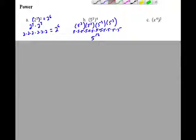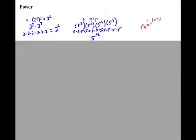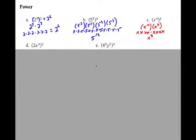One more with variables. We're saying x to the fourth and I'm squaring it, so I'm multiplying it by itself: x to the fourth times x to the fourth. Expand that — we've got x, x, x, x. Over here we've got x, x, x, x. So how many x's do I have total? Four and four is eight. X to the eighth.